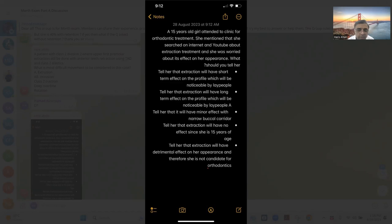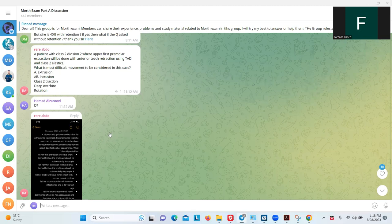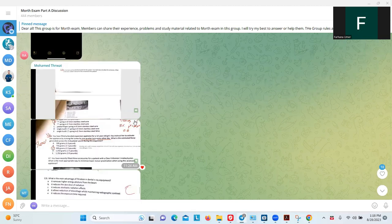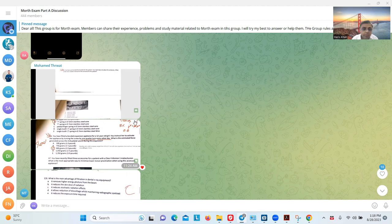And here, 15 years old. She mentioned she searched on the internet and YouTube about extraction treatment. She was worried about the effect on her face. We told that there is no difference, minor effect—actually, minor beneficial effect when it's extraction. So where is this option? Tell her the extraction will have a short-term impact on the profile which will diminish. Tell her the extraction will have long-term—it's a short-term effect. Tell her that if there's a minor effect with narrow buccal corridors, tell her that extraction will have no effect since she's 15 years old. Tell her that extraction will have a detrimental effect on the appearance and therefore she is not a candidate. Highly, they say that even there's a Cochrane systematic review that in carefully decided cases there is no difference.